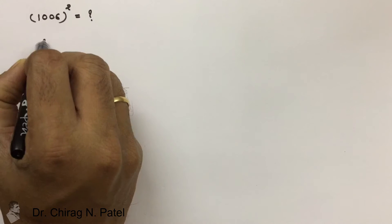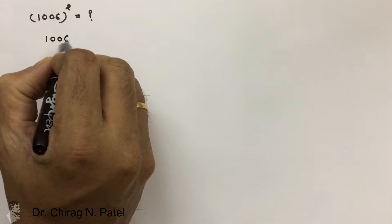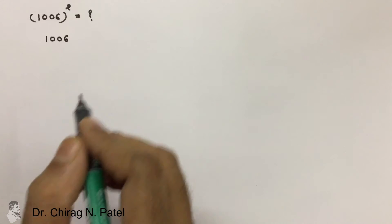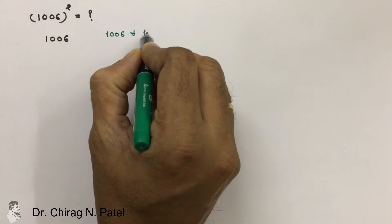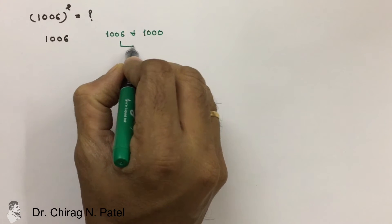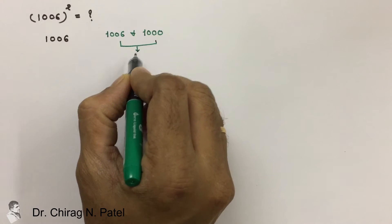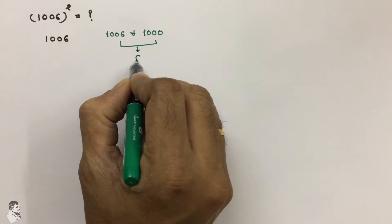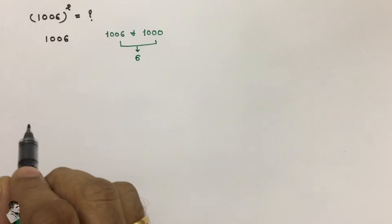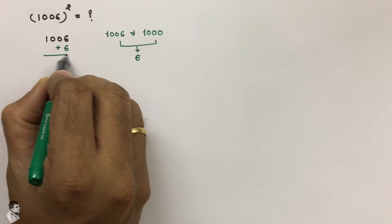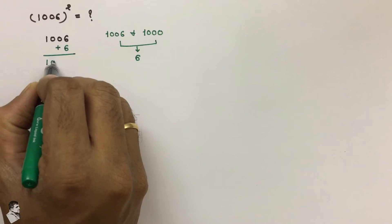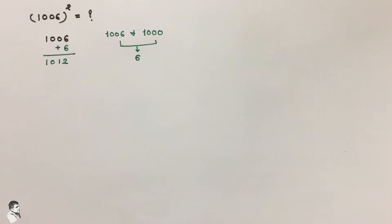Here we have one value that is 1006. Now, if we compare that value with 1000, the difference between these two values would come out as 6. So if we add that 6 to the given value, the answer would be 1012.